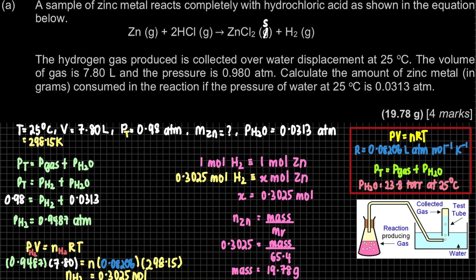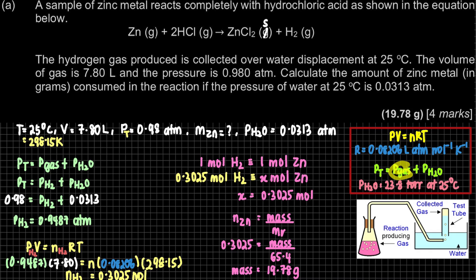In summary, for the water displacement method: first find P_gas using P_total = P_gas + P_H₂O. P_H₂O is fixed; if not given in atm, convert from torr using the list of constants (1 atm = 760 torr). Then use PV = nRT to find moles of gas, apply stoichiometry to find moles of zinc, and finally calculate the mass.